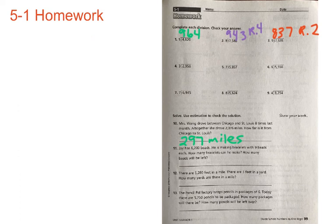Go ahead and complete the rest of this page on your own. When you're finished, check your work. Remember, remainders can be written as R followed by the remainder value on this page. Make sure you take a picture of your work, attach it to your assignment, and turn it in on Teams. Thank you.